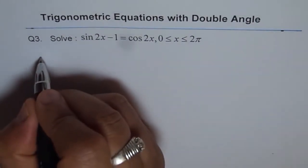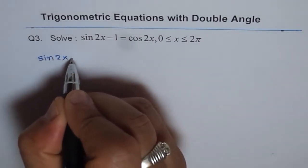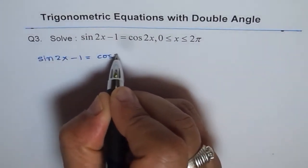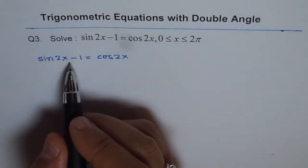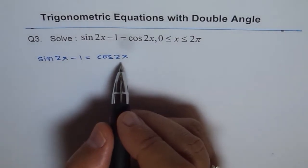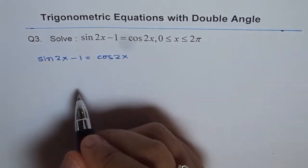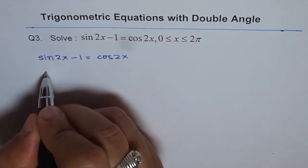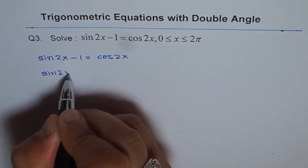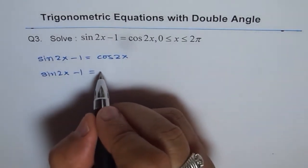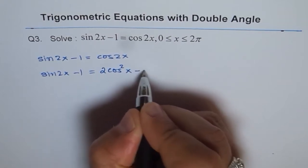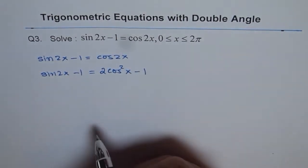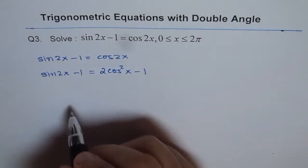The given equation is sin 2x minus 1 equals cos 2x. Now, cos 2x could be written as 2 cos² x minus 1. Let's rewrite this as sin 2x minus 1 equals 2 cos² x minus 1. Minus 1 and minus 1 can be cancelled out.